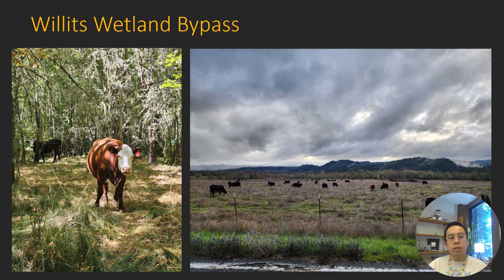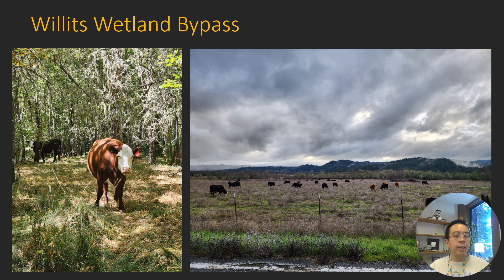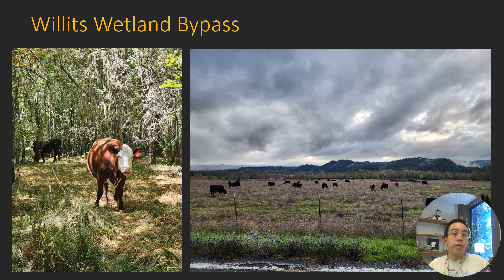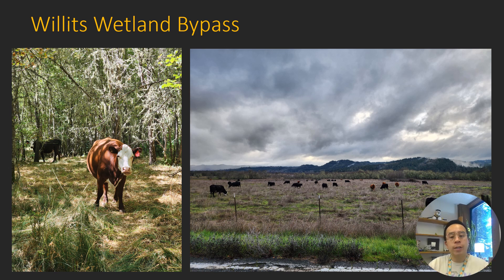Our first example is from the Willits Wetland Bypass, which is about two and a half to three hours south, about 150 miles. If you've driven south on the 101, you will have passed by it. Parts of these areas are now grazed or have always been grazed, while parts have been taken out of grazing. The grazed areas manipulate grazing intensity, frequency, duration, and selectivity to ensure biomass removal and achieve different management goals.